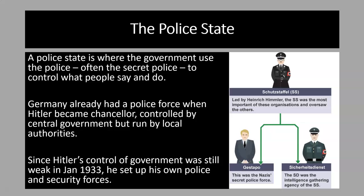When Hitler became chancellor in January 1933, Germany already had a police force. It was controlled by central government, but run by local authorities in Germany's states and towns. Because in January 1933 Hitler's control of government was still weak, he realised that his control of the police was also weak. So Hitler decided to set up his own police and security forces that were not run by the government — instead they were run by the Nazi party and accountable to Hitler.